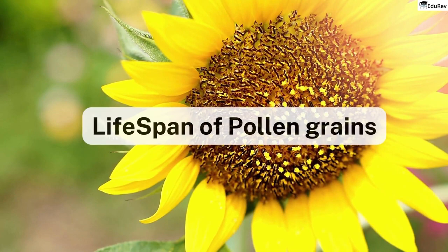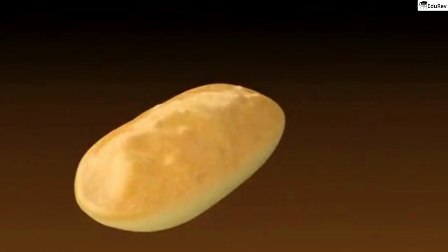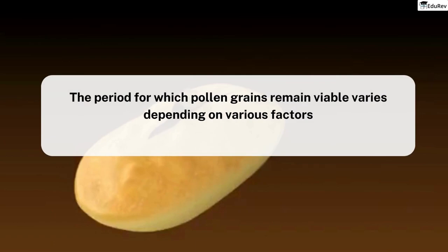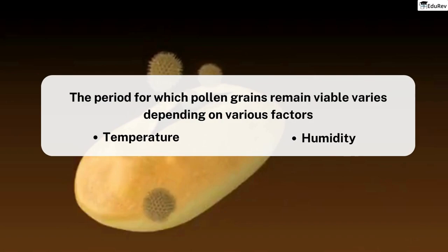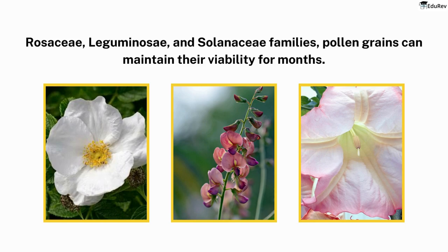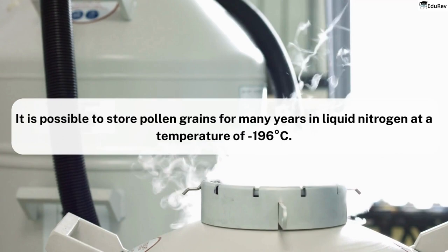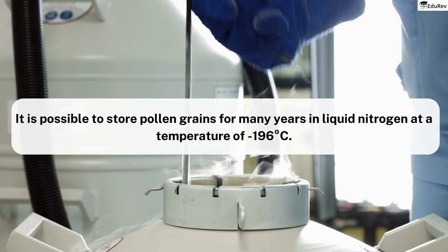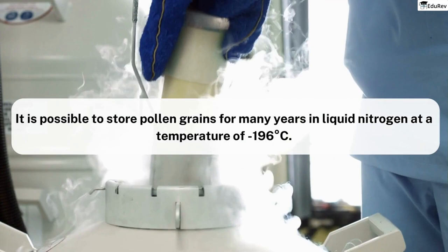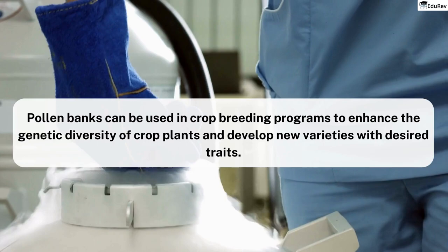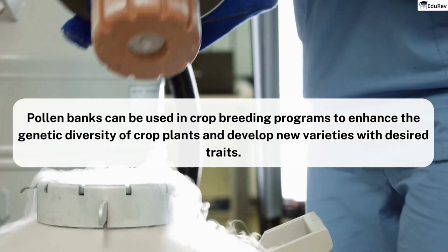Lifespan of pollen grains: it's fascinating to learn that pollen grains have a limited lifespan after they are shed. The period for which pollen grains remain viable varies depending on factors such as temperature and humidity. In some cereals like rice and wheat, pollen grains lose their viability within just 30 minutes of release. However, in certain members of Rosaceae, Leguminosae, and Solanaceae families, pollen grains can maintain their viability for months. Interestingly, just like how we can store semen and sperms for artificial insemination, it is possible to store pollen grains for many years in liquid nitrogen at a temperature of minus 196 degrees Celsius. This method of storing pollen grains is useful in creating pollen banks, similar to seed banks, which can be used in crop breeding programs to enhance genetic diversity and develop new varieties with desired traits.